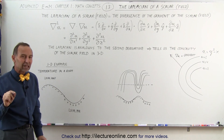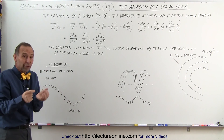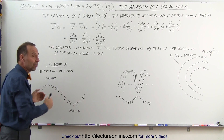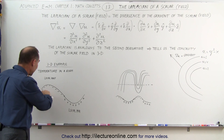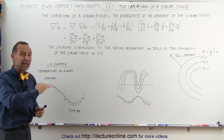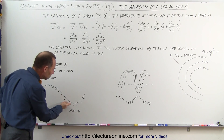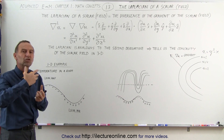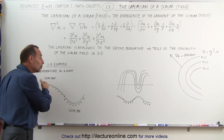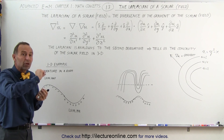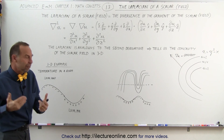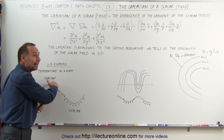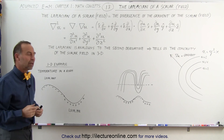If we take the second derivative — in other words, the Laplacian of that temperature function — you can see that here the Laplacian would be negative because it's concave down, and here the Laplacian would be positive because it's concave up. The Laplacian tells us how the change is changing. Even though the temperature may be increasing, the increase gets smaller and smaller. So the change of change being negative means the increase is getting smaller, and eventually it will top out and begin to decrease.